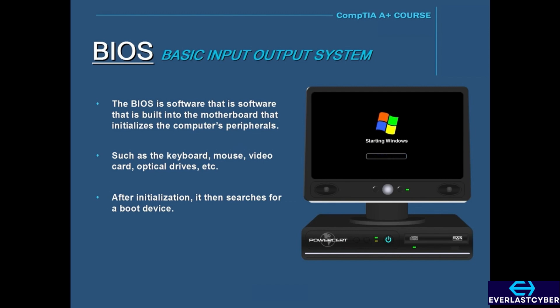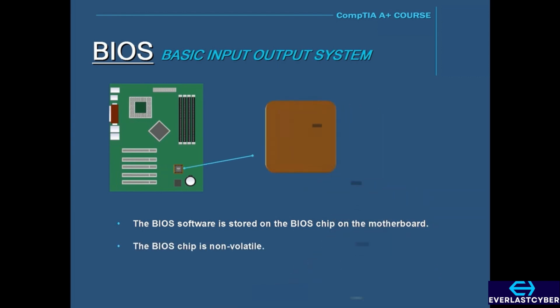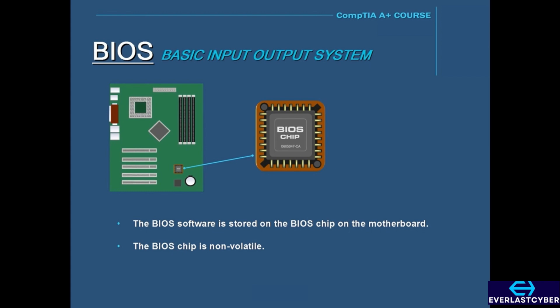The BIOS software is stored on the BIOS chip on the motherboard. The BIOS chip is non-volatile, which means that the software and settings are retained even after the power is turned off. On modern computers, the BIOS is stored on flash memory chips, which makes the BIOS capable of being updated using a special program.